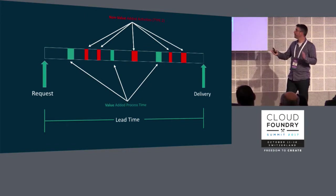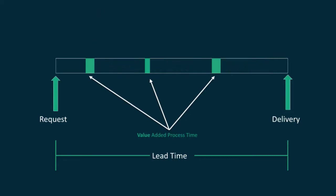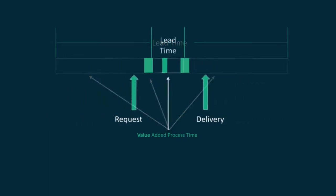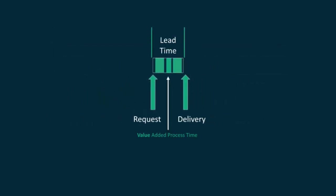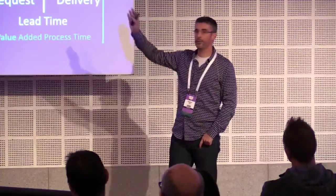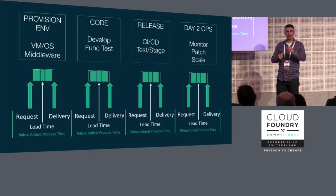Going back to our value stream, what we're doing is eliminating waste and trying to get our lead time to match our process time as closely as possible. When you factor in all the different disciplines that go into delivering software, you find different value streams for different stages: provisioning an environment, coding, releasing, data operations — each has its own value stream. You can spend time mapping out what that looks like using Cloud Foundry versus outside Cloud Foundry.